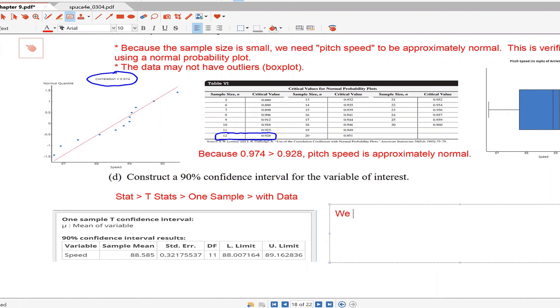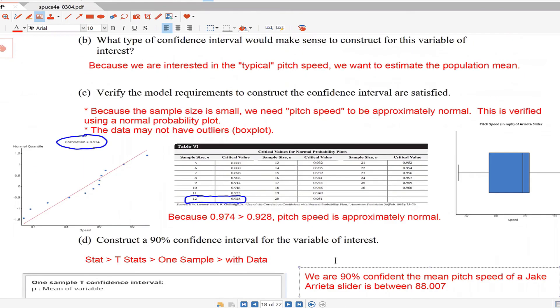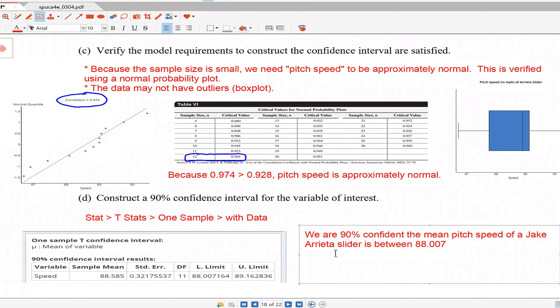Here we are 90% confident the mean pitch speed of a Jake Arrieta slider is between 88.007 miles per hour and 89.163 miles per hour. If we wanted a more precise interval, we would have to either lower the level of confidence or increase the sample size.